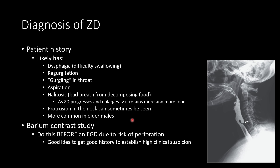If it is bad enough, you can actually see a protrusion in the neck on physical exam. It is more common in older elderly males. If you have high clinical suspicion and a good history, you're going to want to do a barium contrast study — the patient swallows barium and you take an image of their esophagus. And lo and behold, you can see a nice big pouch right there. The barium contrast study is the confirmatory test for Zenker's Diverticulum.